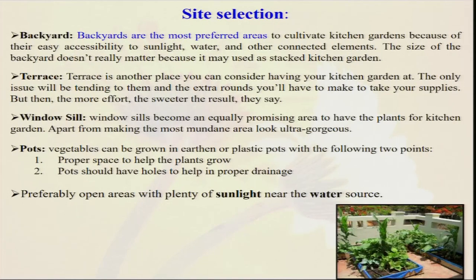Backyards are the most preferred areas — the area near about your house. If people do a kitchen garden, it means near about your kitchen, so that whatever you need — suppose coriander when you want to cook — you immediately go to the balcony or backyard and take some coriander. Kitchen garden is not promoted 100 meters or half a kilometer from your house; it is always preferred near your house, that is called the backyard of the house.